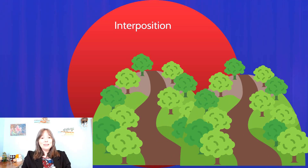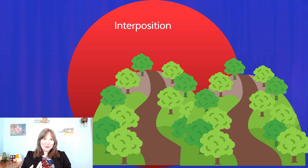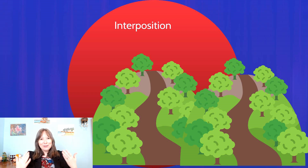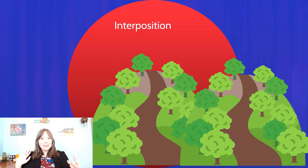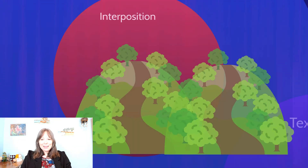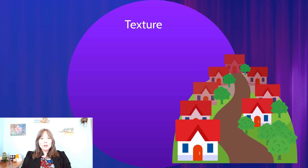A third monocular cue is interposition. Looking at a group of trees, some overlap others. The trees that are in front of — overlapping — other trees are assumed to be closer. If an object is partially behind another, we know the partially hidden object is further away than the one we can see fully. A fourth monocular cue is texture gradient: as things are further away, their texture details become less clear.